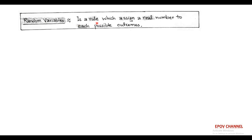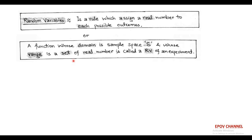Random variables can also be defined as a rule which assigns a real number to each possible outcome. Random variables can also be defined in terms of sample space and random experiment. Here, a random variable is defined as a function whose domain is a sample space and whose range is a set of real numbers.